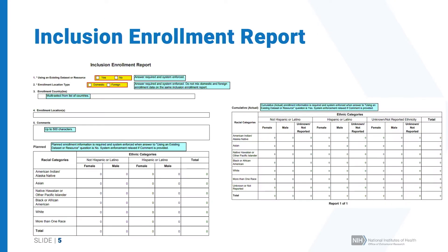You'll submit an inclusion enrollment report with your application. The inclusion enrollment report includes a table with the sex or gender, race, and ethnicity of each participant in your research — either planned or actual, depending on whether you have enrolled your participants yet. It also includes data attributes such as whether you are using an existing data set and whether the population is foreign or domestic. If you are recruiting individuals both within and outside the U.S., you'll need to provide that information on separate forms.